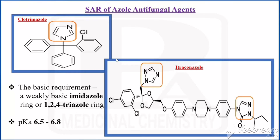What is the basic requirement for an azole antifungal agent? It should have a weakly basic azole ring — that azole may be an imidazole or 1,2,4-triazole. The pKa of the drug should be between 6.5 to 6.8.